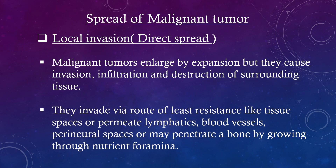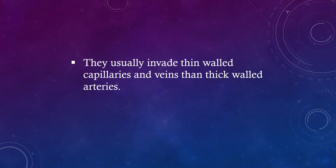Spread of malignant tumor: local invasion and direct spread. Malignant tumors enlarge by expansion but they cause invasion, infiltration and destruction of surrounding tissue. They invade via the route of least resistance like tissue spaces, or permeate lymphatics, blood vessels, perineural spaces, or may penetrate bone by growing through nutrient foramina. They usually invade thin-walled capillaries and veins rather than thick-walled arteries.